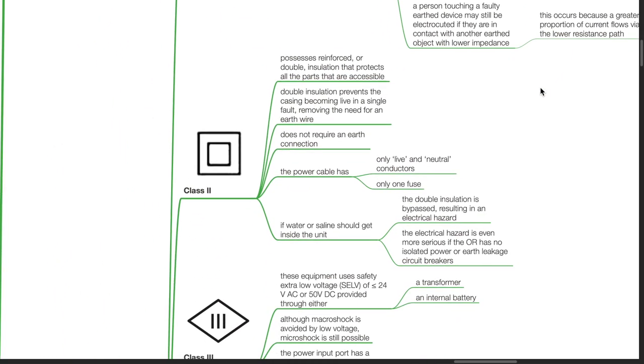Class 2 equipment possesses reinforced or double insulation that protects all accessible parts. Double insulation prevents the casing becoming live in a single fault, removing the need for an earth wire. There is no need for earth connection; the power cable has only live and neutral conductors and only one fuse. If water or saline gets inside the unit, the double insulation is bypassed, resulting in an electrical hazard that is even more serious if the OR has no isolated power or earth leakage circuit breakers.